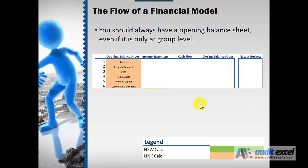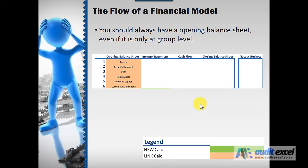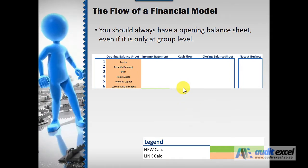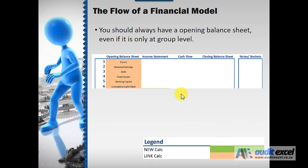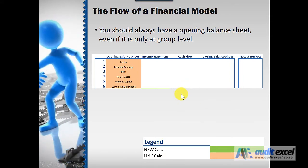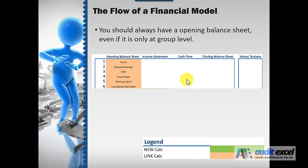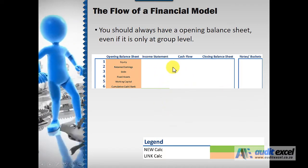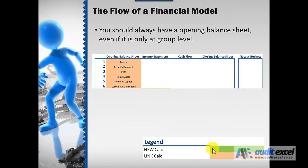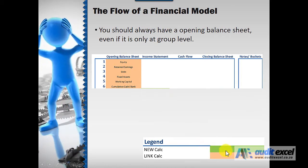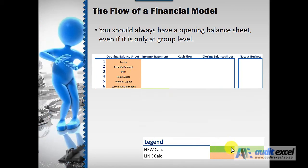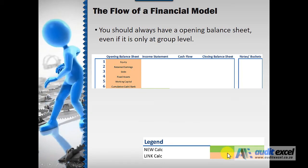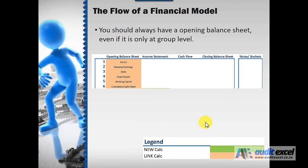When you build financial models, it is important that there's a logical flow and as much as possible you must try and only do calculations once. We're going to go through the flow of a financial model. Where there's green, that's a brand new calculation; where there's beige, it means we've just linked the calculation.